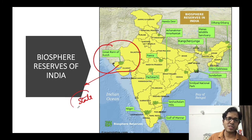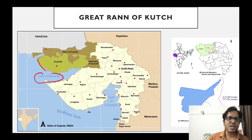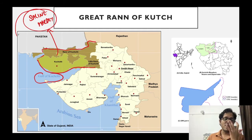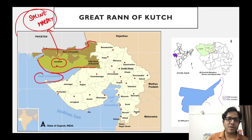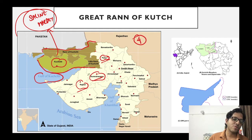This is the state of Gujarat. These are the saline marshes - marshy kind of area. Apart from Kutch district, this biosphere also spans Surendranagar, Rajkot, and Patan districts. All four districts: Kutch, Patan, Surendranagar, and Rajkot. Run of Kutch Biosphere Reserve has two subdivisions: Greater Run of Kutch in the north, and Little Run of Kutch in the south.